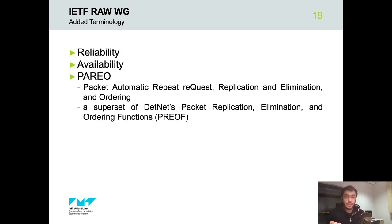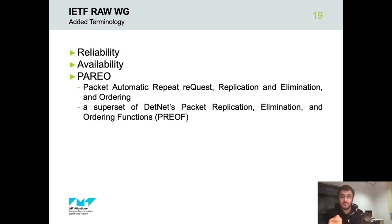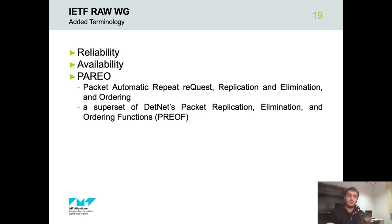PAREO — Packet Automatic Repeat Request, Replication, and Elimination, and Ordering — is the next terminology. PAREO is a superset of DetNet's packet replication, elimination, and ordering functions. It includes radio-specific techniques such as short-range broadcast, constructive interference, and overhearing, which can be leveraged separately or combined to increase reliability.